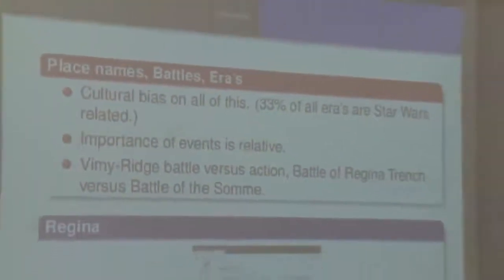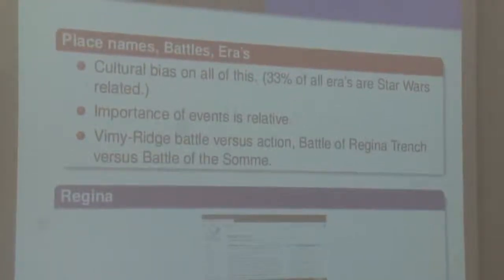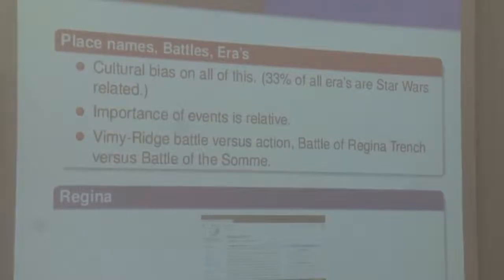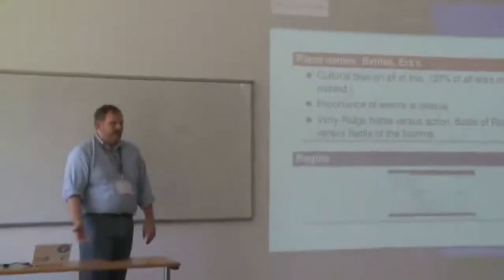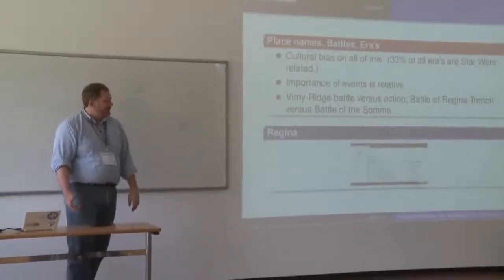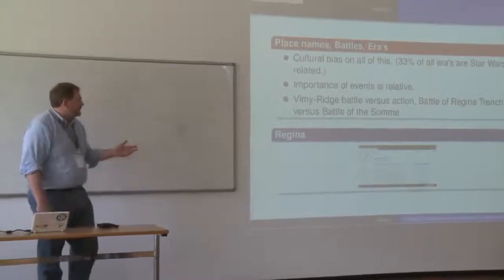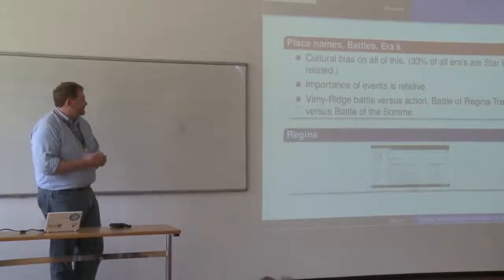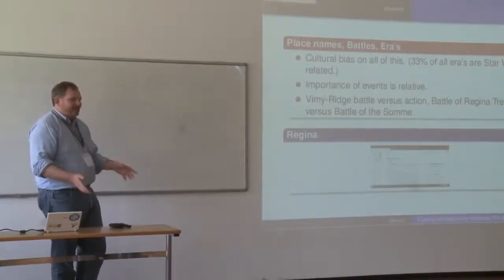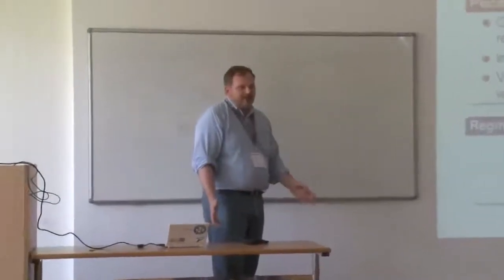Among the concepts sought in Wikipedia was 'historical period' — the Victorian era, the Edwardian era, the Warring States era. There is an Infobox called Era for history purposes, but it has been hijacked for Star Wars content. This requires a lot of human curation. Similarly, 'important events' is relative to your viewpoint — the Battle of Regina Trench is a sub-battle of the larger Battle of the Somme, and its relative importance depends on whether you're Canadian or a general historian.